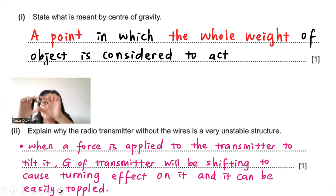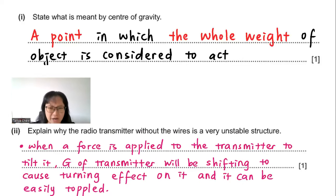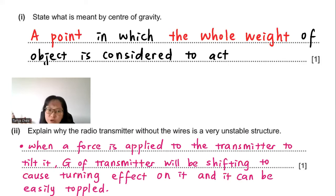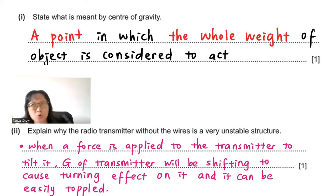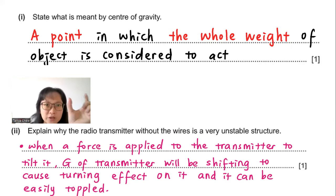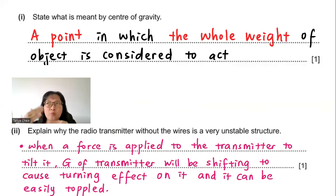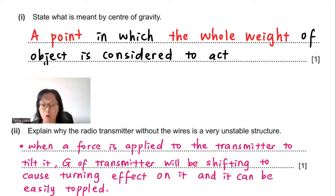Part A2: Explain why the radio transmitter without wires is a very unstable structure. Because it is very tall and thin, applying a force can cause it to tilt. When it tilts, the centre of gravity shifts away from the base, creating a turning effect or moment that causes the transmitter to topple over.